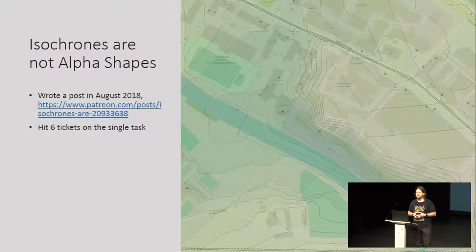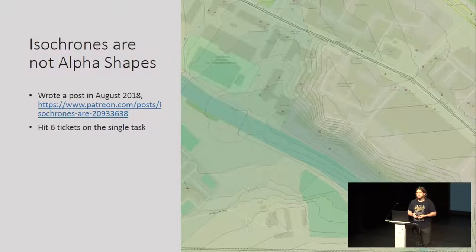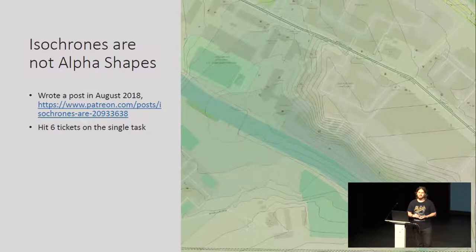I said no, you shouldn't be using alpha shapes. You should construct a TIN, and after you construct a TIN, you should slice it — that's how you get the isochrones. I tried to show how easy that is. Unfortunately, while writing this article, I managed to create or find six tickets in open source projects showing that this simple task is not possible.